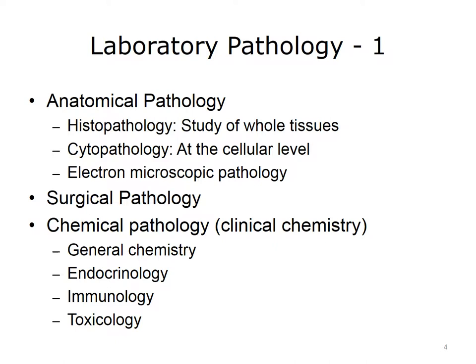Electron microscopic pathology uses advanced technology to generate highly magnified images of tissues to help identify and diagnose diseases. Another subset of pathology is surgical pathology, which involves the gross and microscopic examination of surgical specimens as well as biopsies. Yet another field is chemical pathology, or clinical chemistry, which is the analysis of body fluids.